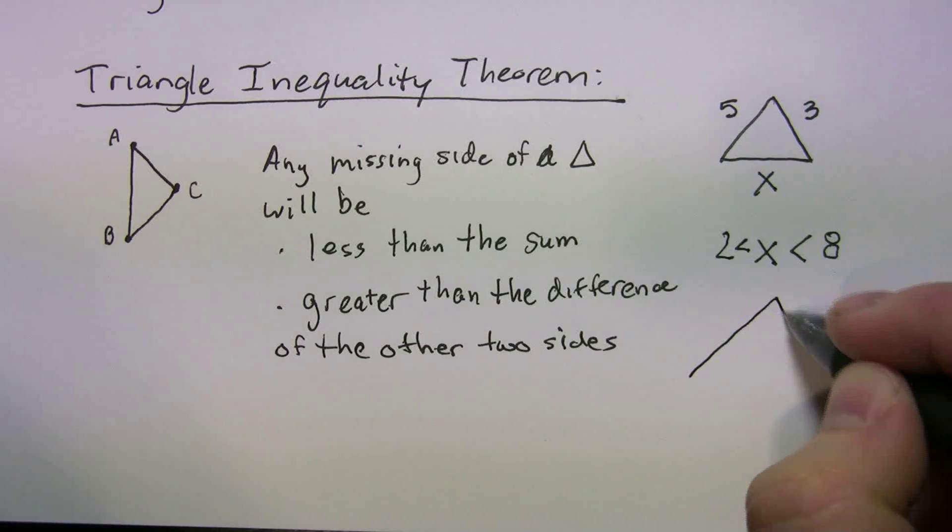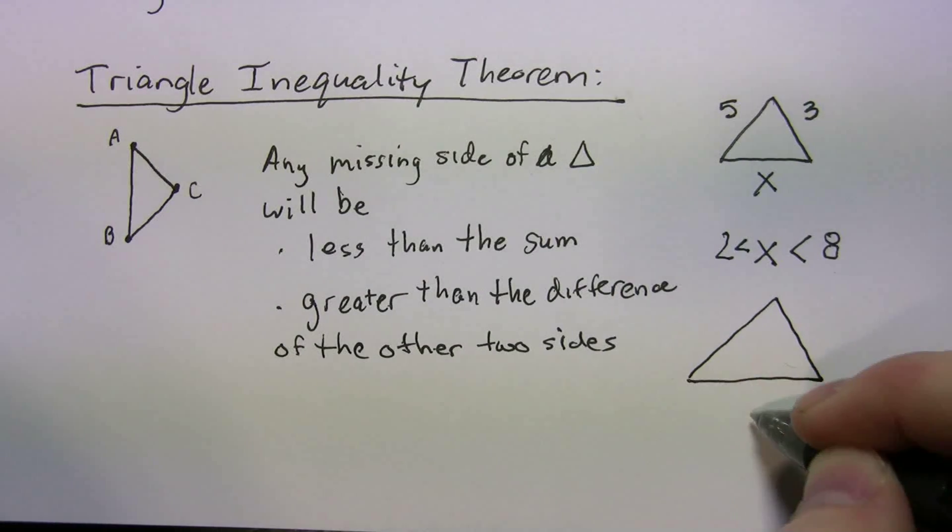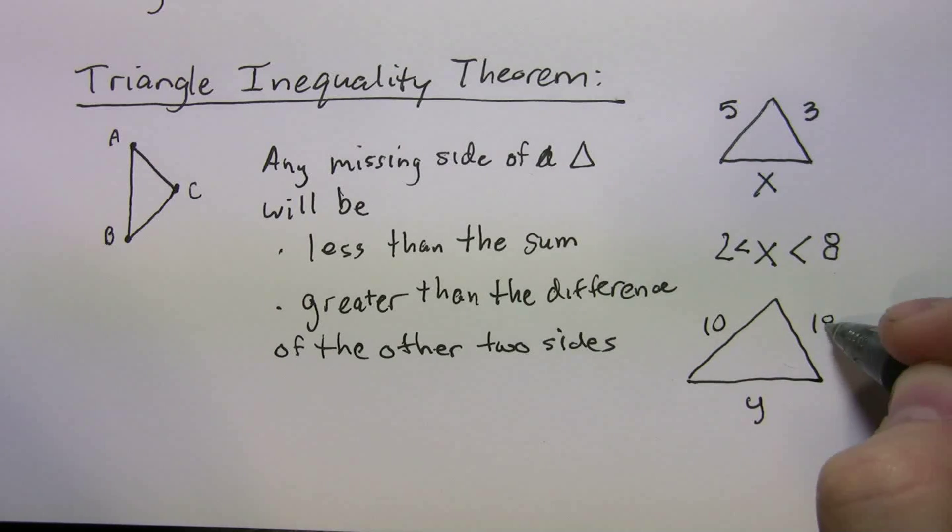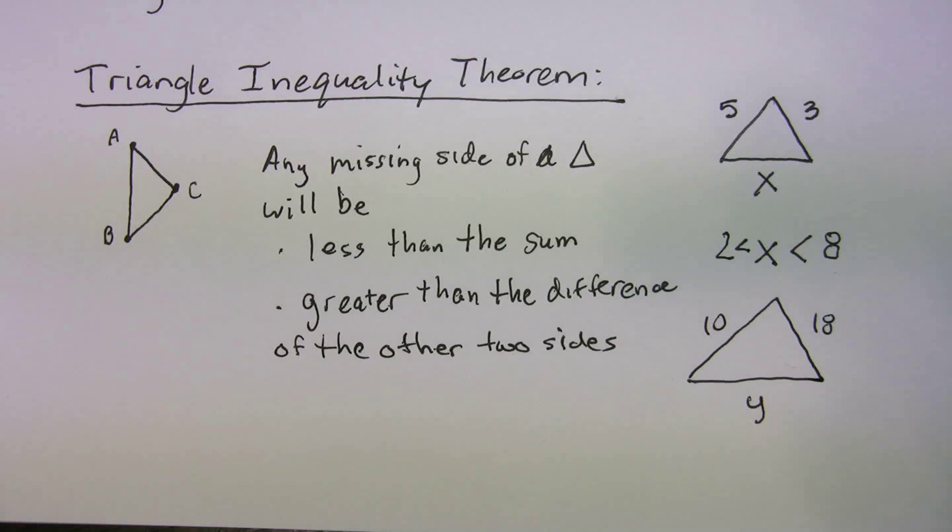So real quick, why don't you guys tell me, if I have some value y, and this is 10 and this is 18, what values can y be? I'll give you a second. All right, y should be less than 28, less than the sum, and greater than 8. So that's your range of possible values for y.